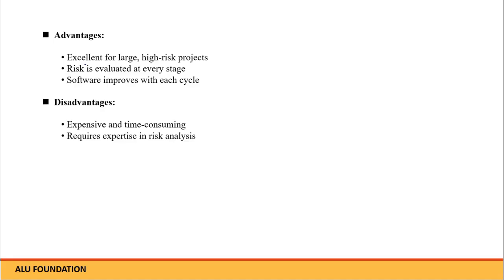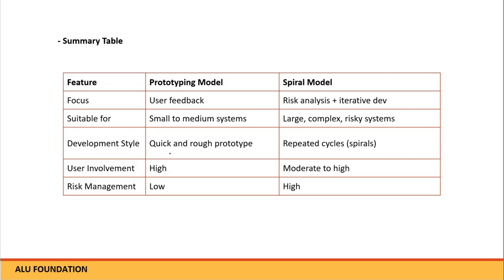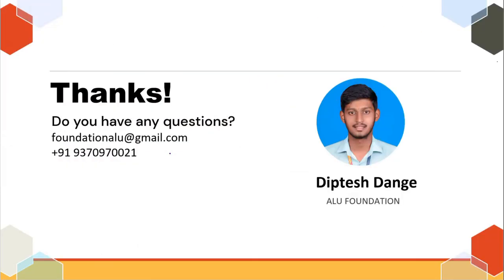Advantages of the Spiral Model: excellent for large and high-risk projects, risk is evaluated at every stage, and software improves with each cycle. Disadvantages: it is expensive and time-consuming and requires expertise in risk analysis. If you want notes, you can join our WhatsApp group. This completes the session on the Evolutionary Process Model, Prototyping Model, and Spiral Model. See you in the next video, bye bye.